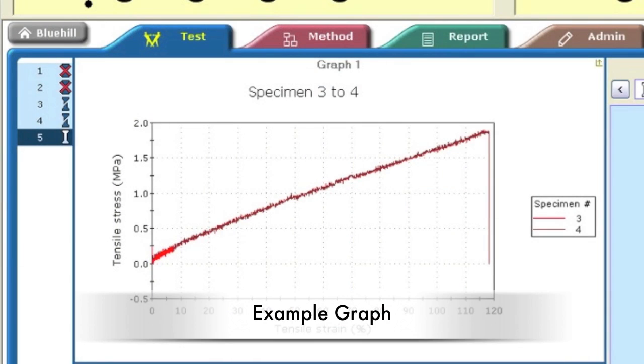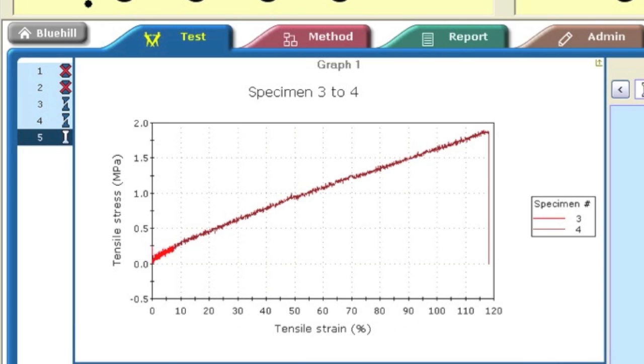This is an example of a typical tensile test. The graph shows the tensile stress and strain, and the drop off indicates the failure of the sample.